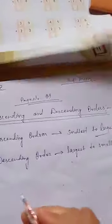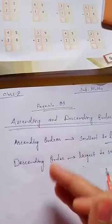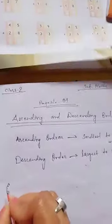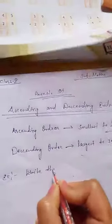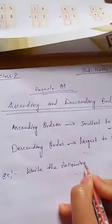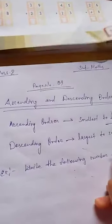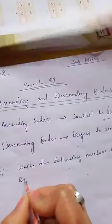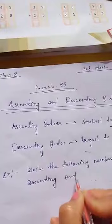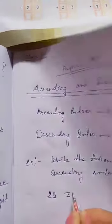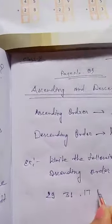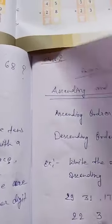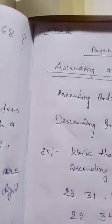Smallest to largest means we arrange the given numbers from smallest to largest. For example, your question is: write the following numbers in ascending order. The given numbers are 29, 31, 17, 22, and 34. These numbers are gathered here.